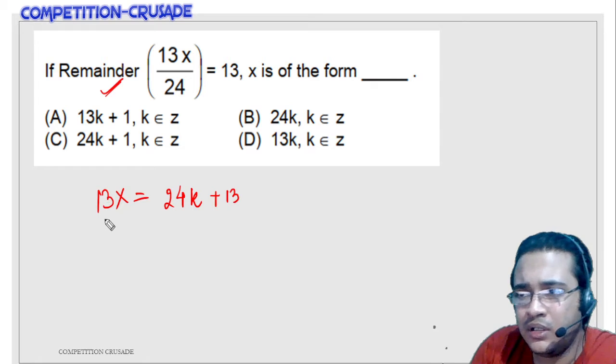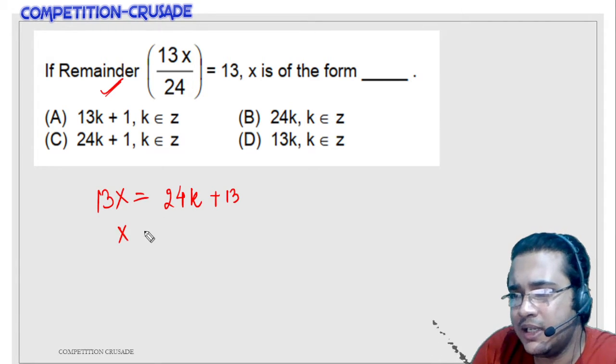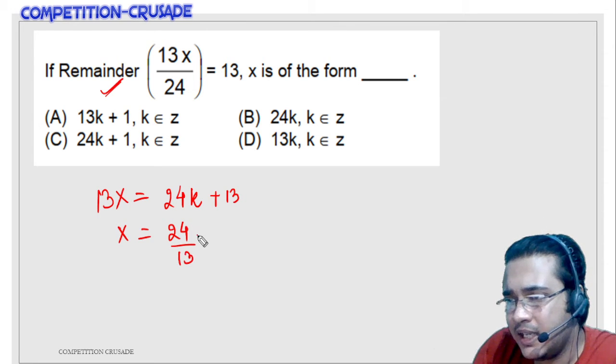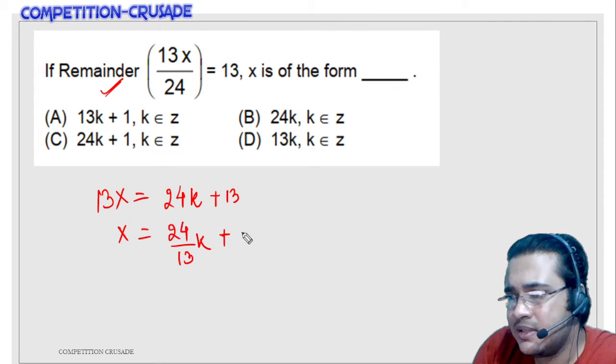So if you just divide 13 throughout, you will get x is equal to 24 upon 13k plus 1.